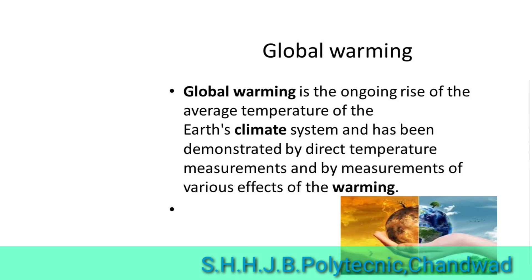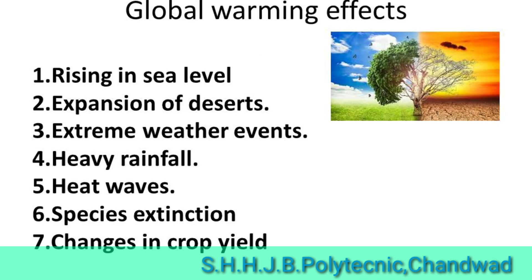The second environmental issue is global warming. Global warming is the ongoing rise in temperature of the Earth's climate system and has been demonstrated by direct temperature measurement and by measurement of various effects of the warming. The effects of global warming include: rise in sea level, expansion of deserts, extreme weather events, heavy rainfall, heat waves, species extinction, and changes in crop yield.